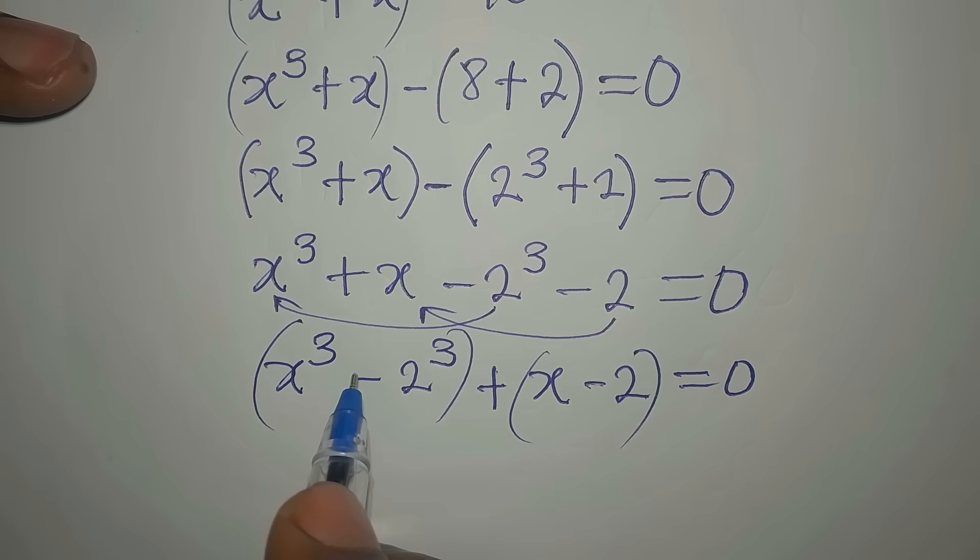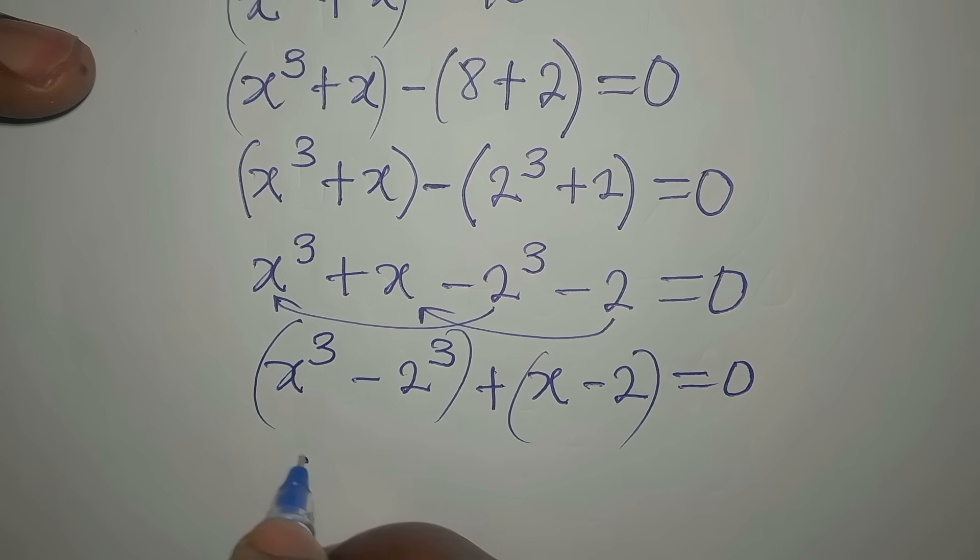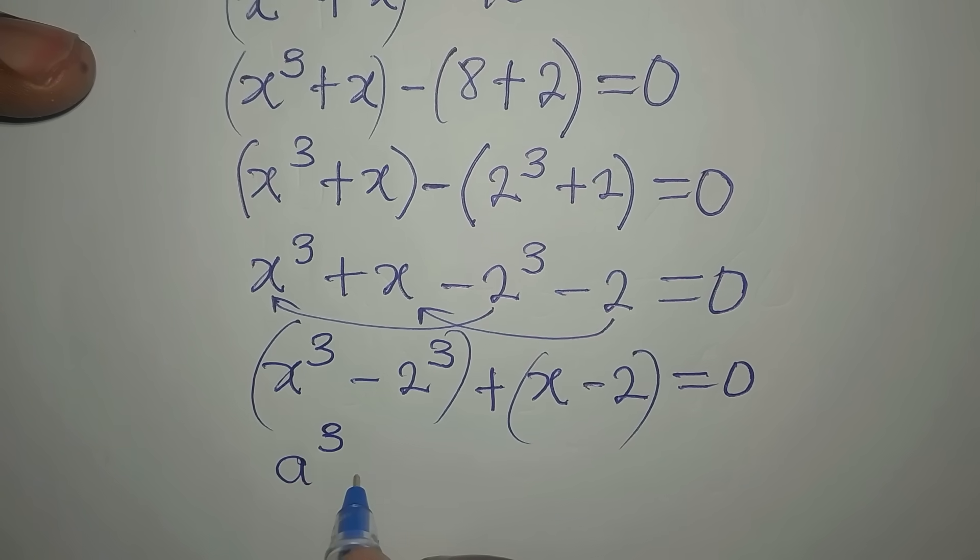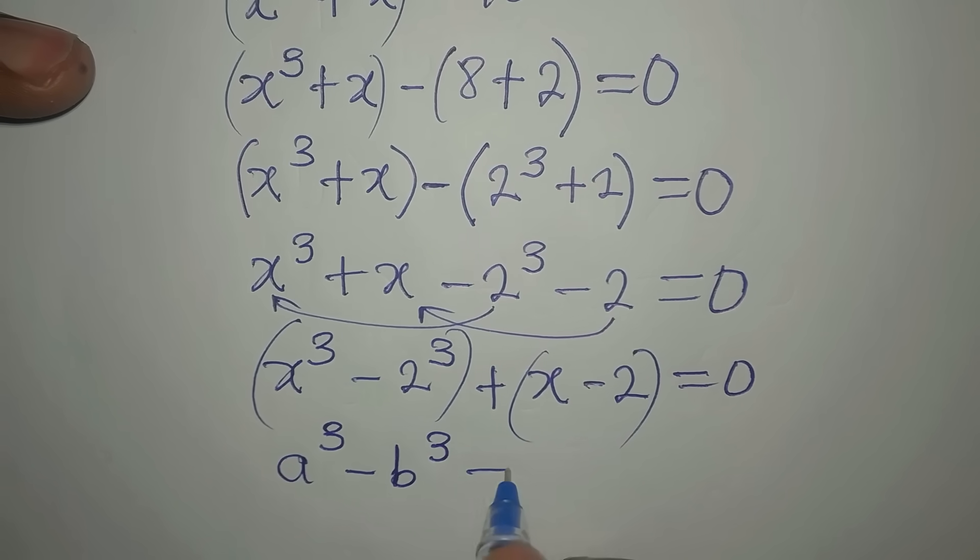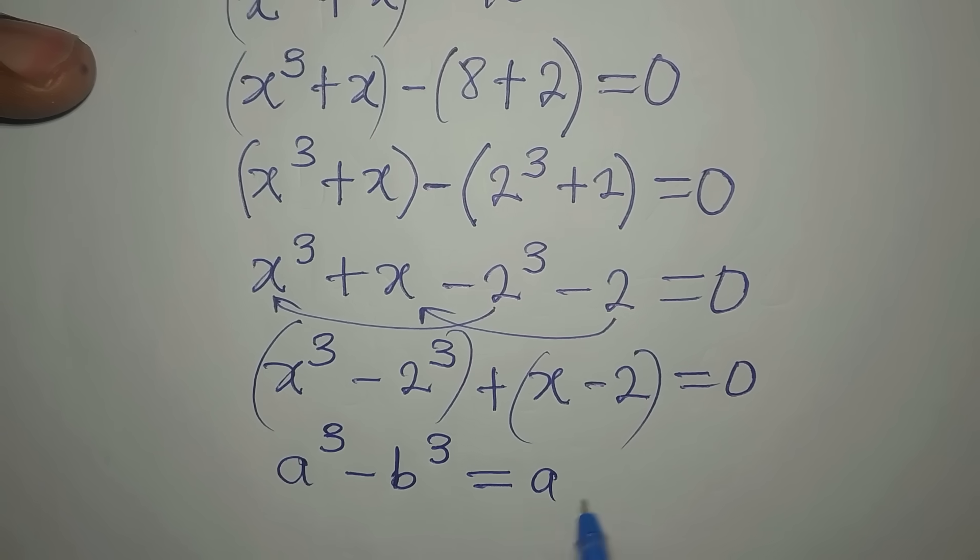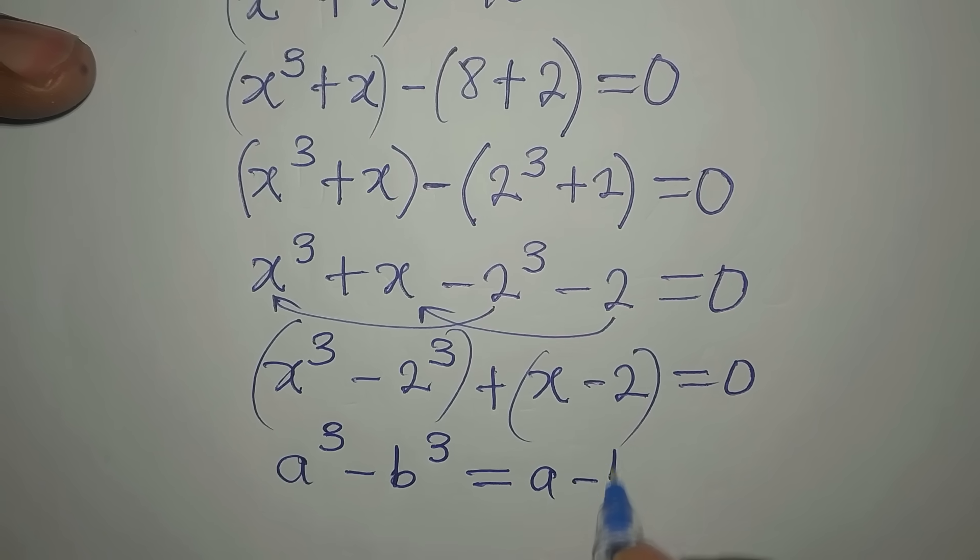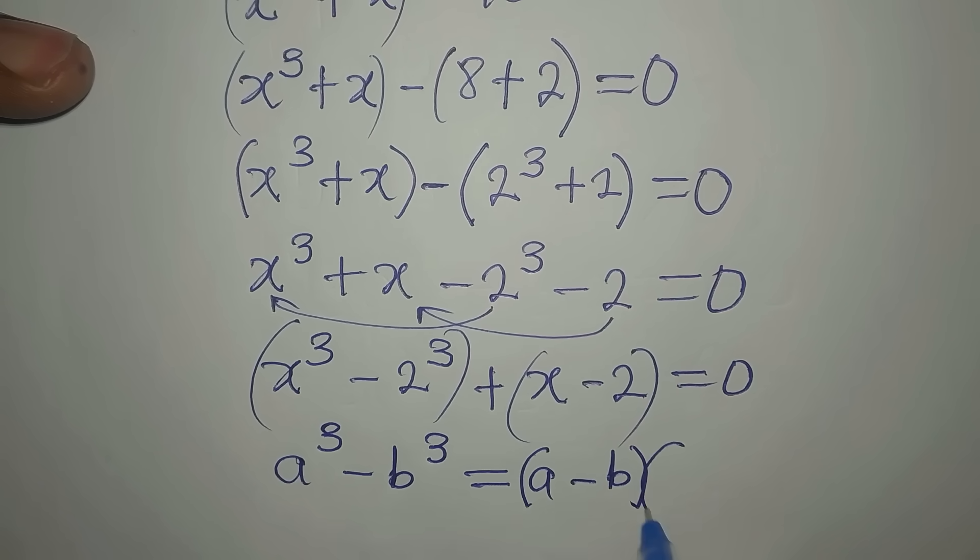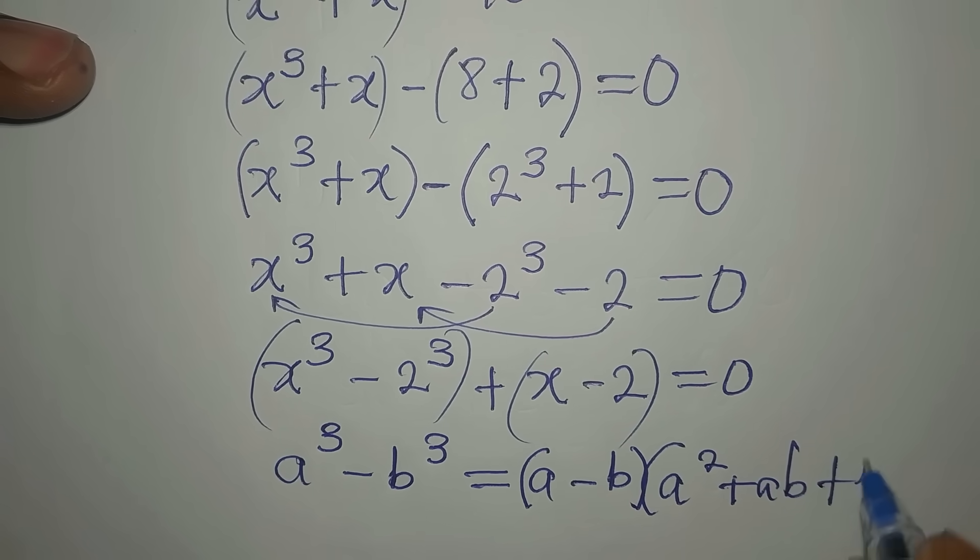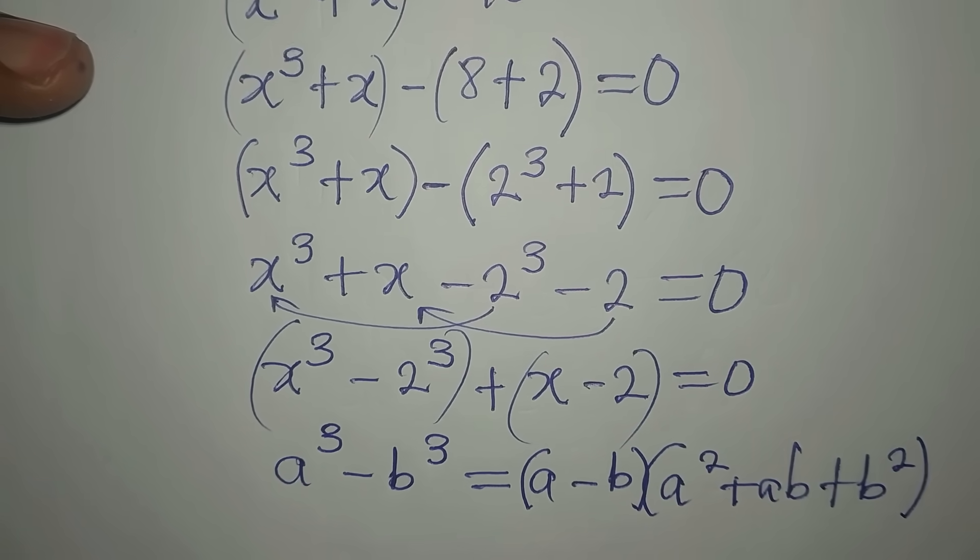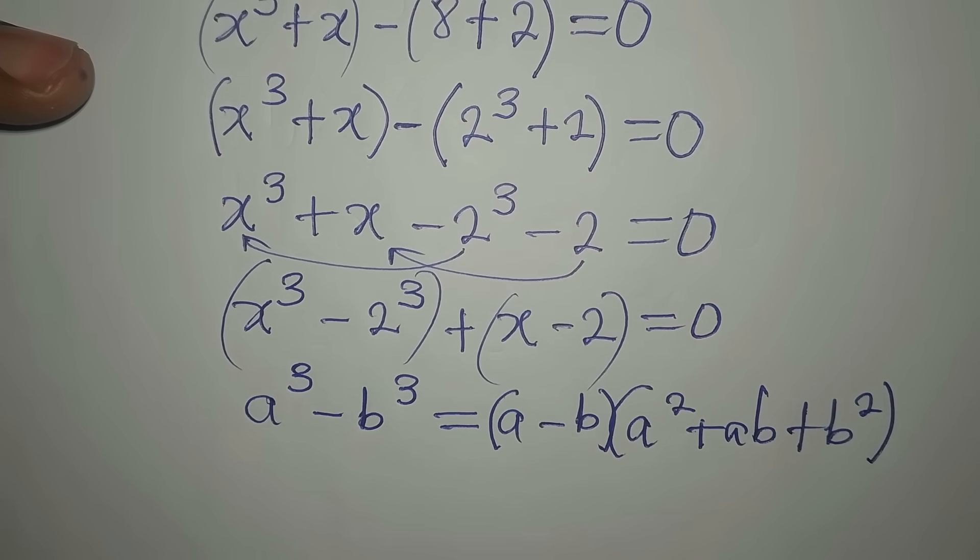Mind you, if you have a to the power of 3 minus b to the power of 3, this is the same thing as a minus b into a squared plus ab plus b squared. Difference of two cubes.